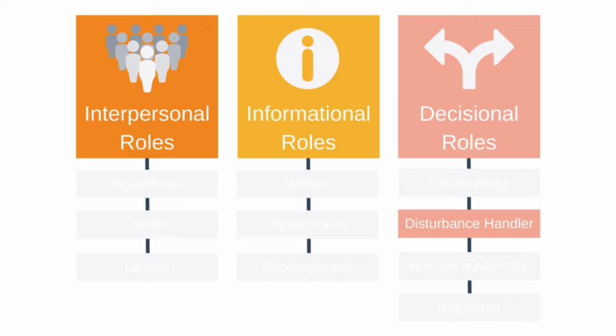The next decisional role is disturbance handler. You act as a disturbance handler whenever you react to problems, issues, conflicts, disputes, or any roadblocks that occur. These disturbances or crises could be external or internal to your team. For example, maybe you mediate a disagreement between two team members, or quickly help your team switch to remote working during a pandemic.